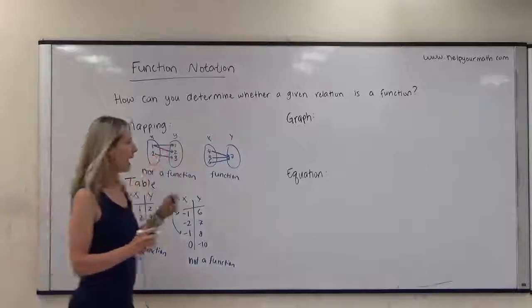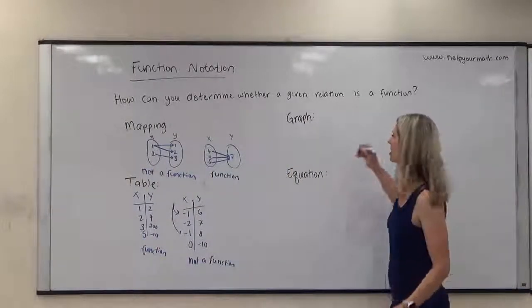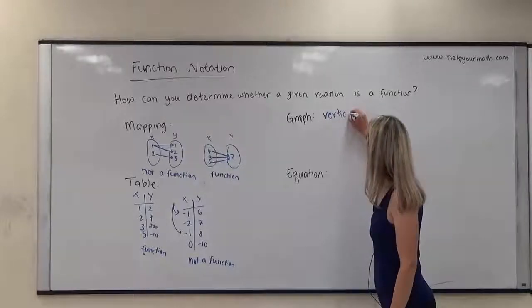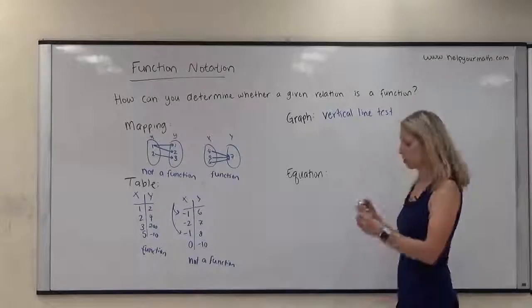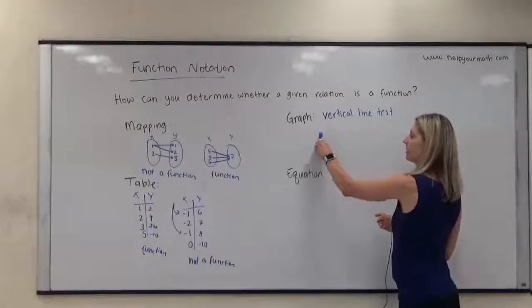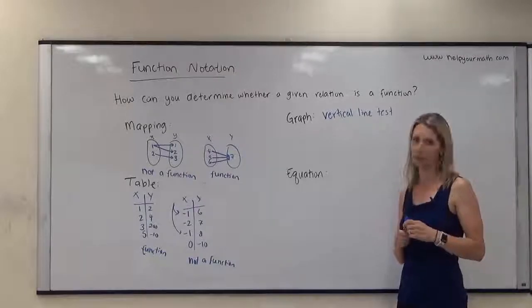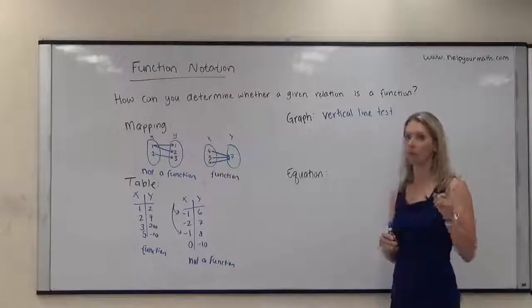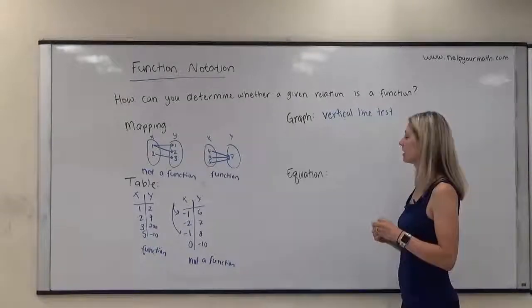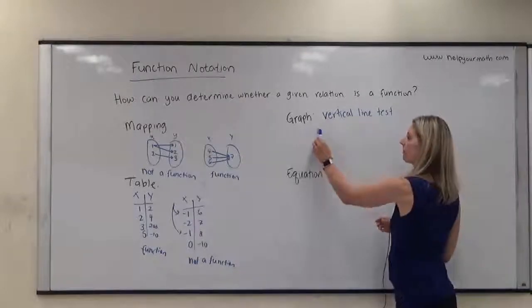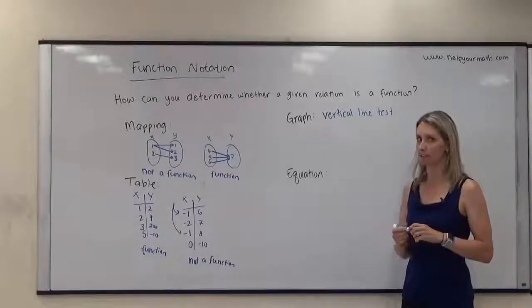If you're given a graph, the way you check it is by doing something called the vertical line test. The vertical line test means you should be able to drop vertical lines anywhere in the graph and have them hit the graph no more than one time. If a vertical line hits the graph in more than one place, then it is not a function. As long as it doesn't hit the graph more than once, it is a function.